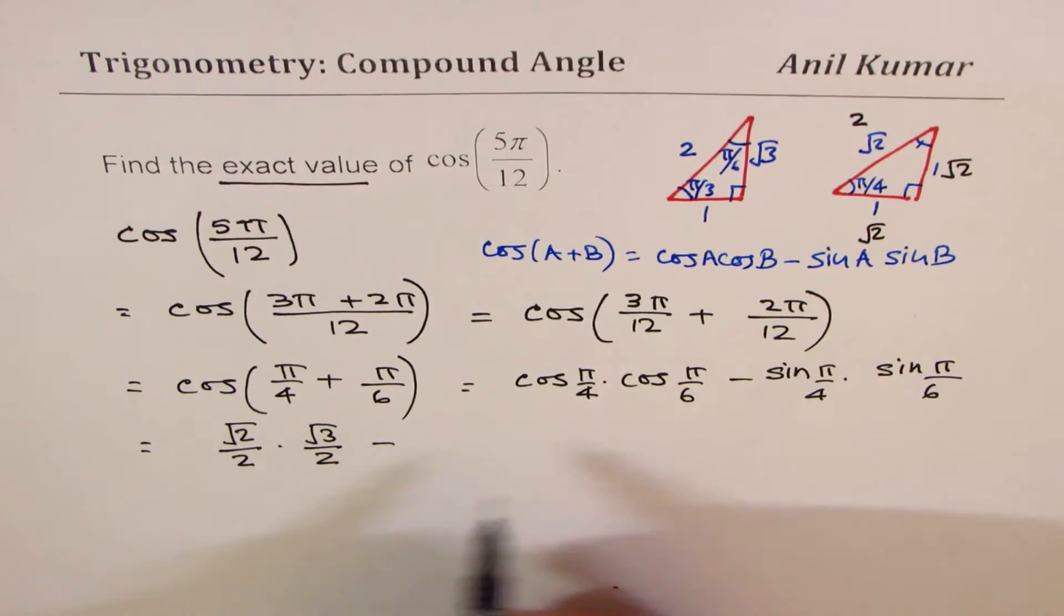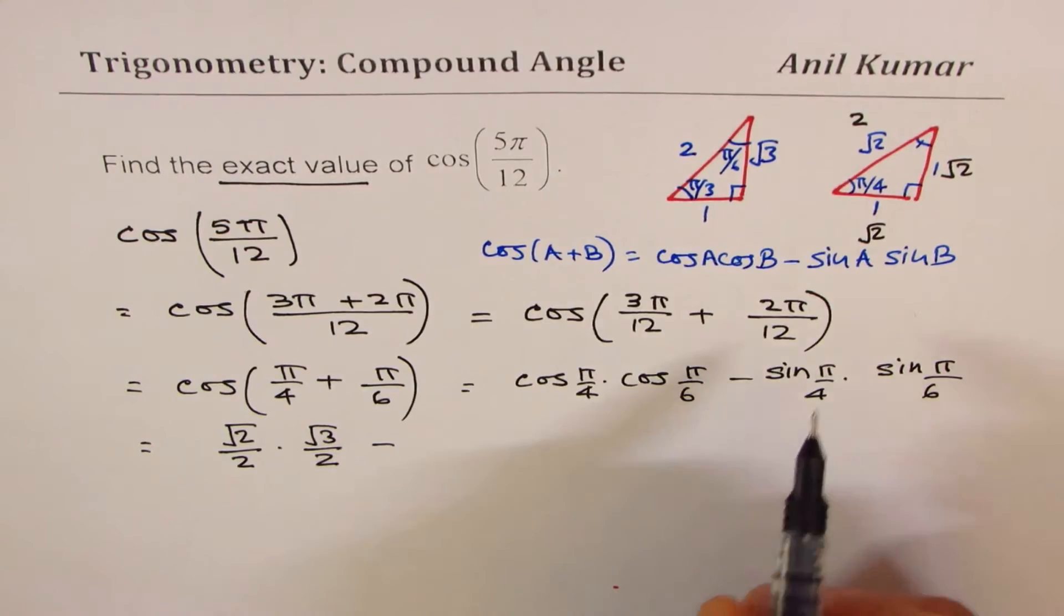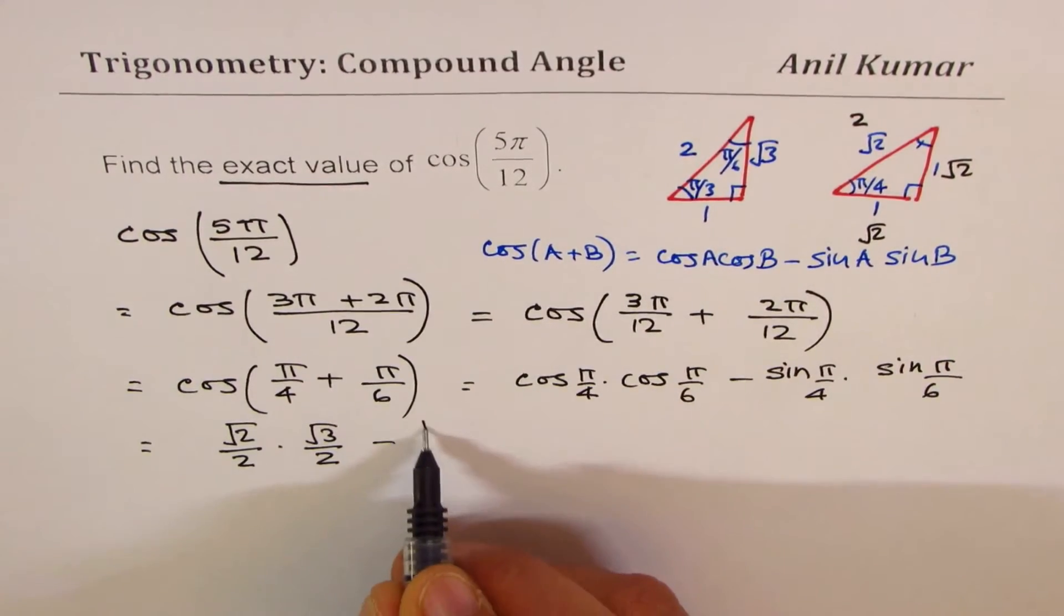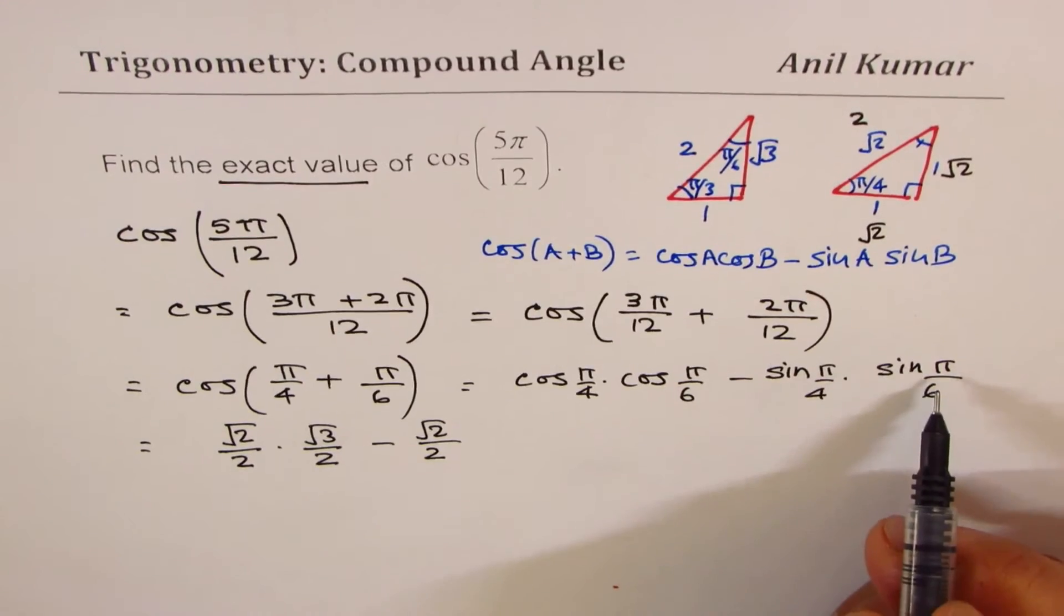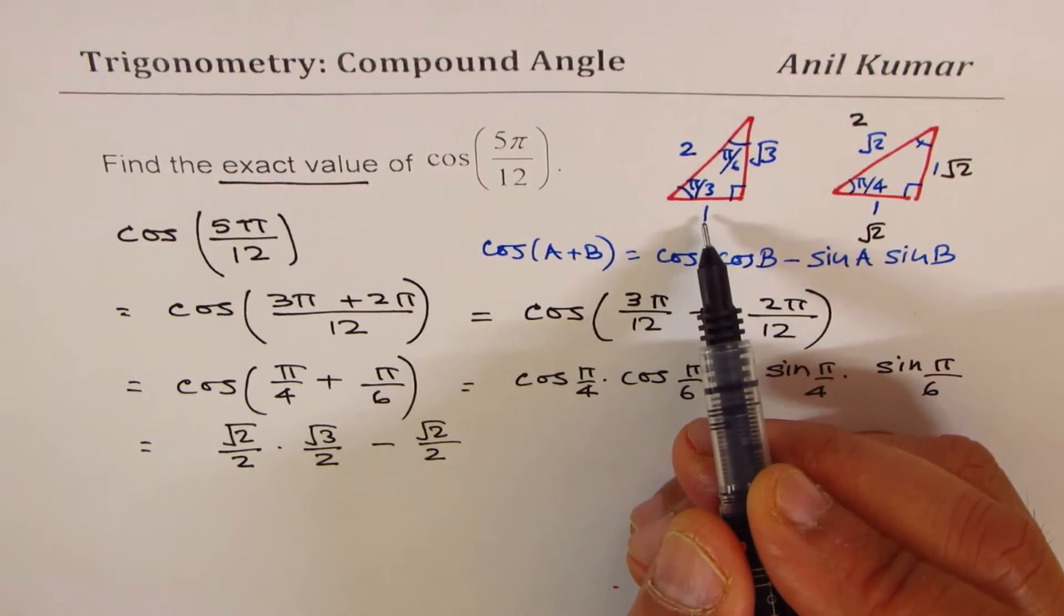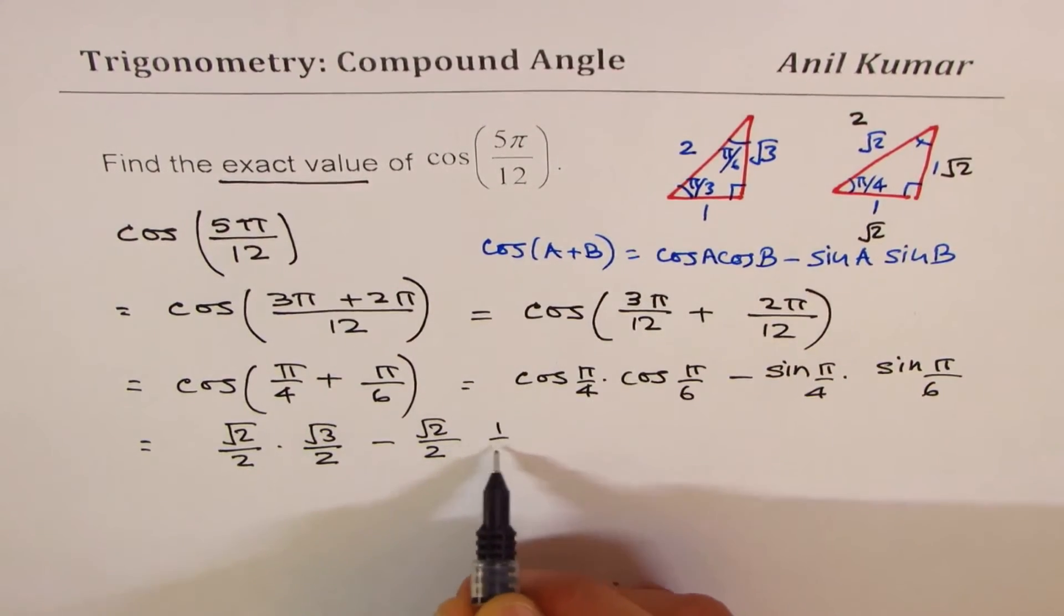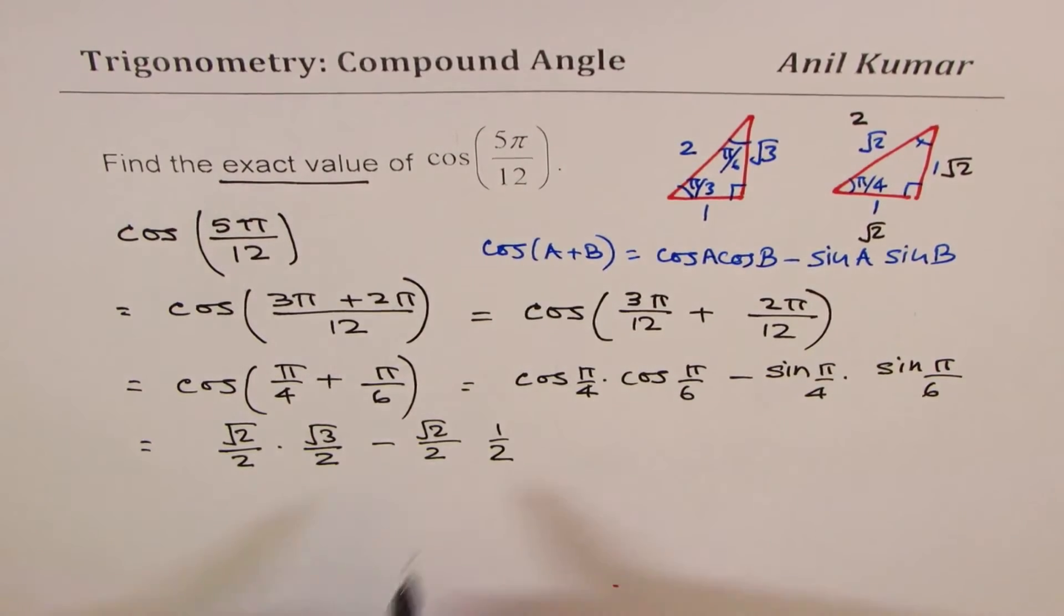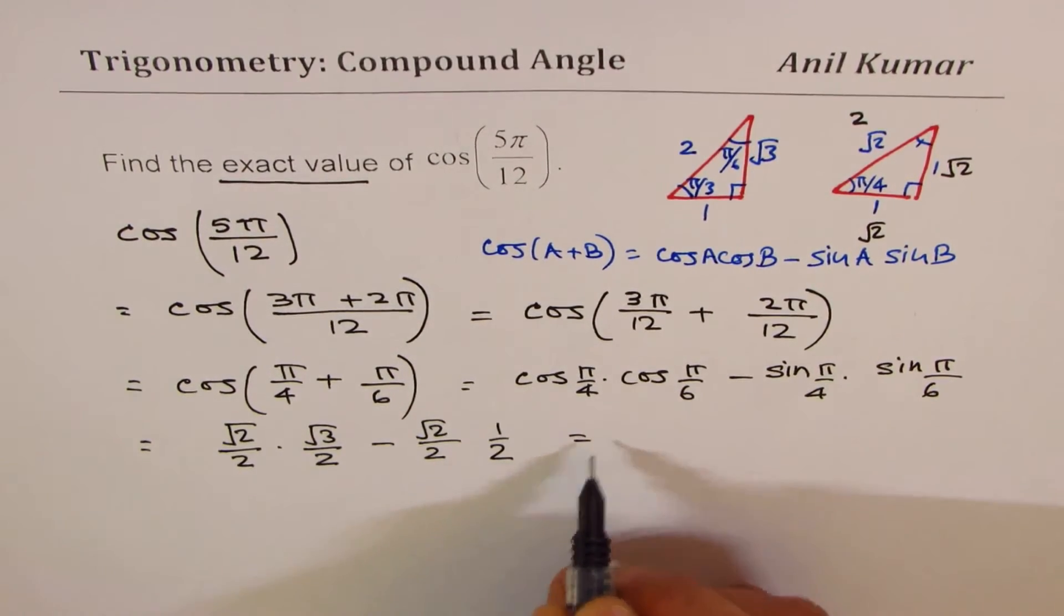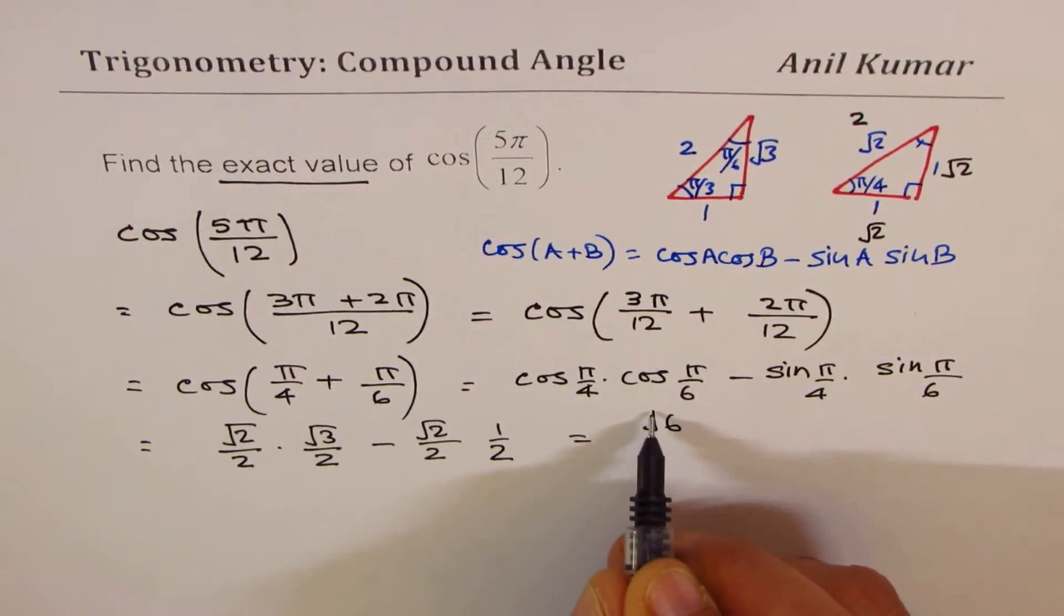Now we have to write sin(π/4) which is again √2/2. And sin(π/6) is the opposite side of 1, so it is 1/2. Correct? Now 4 is your denominator.